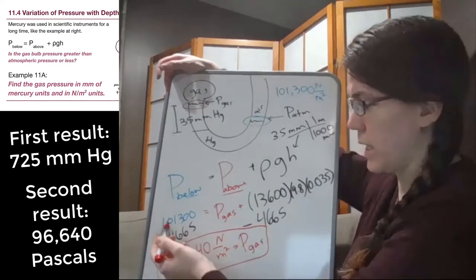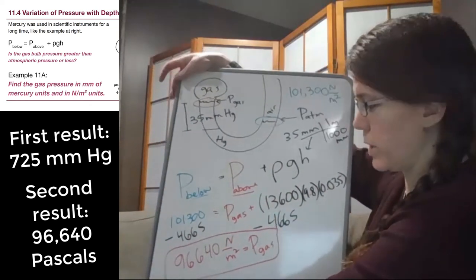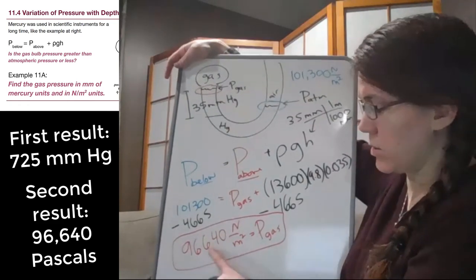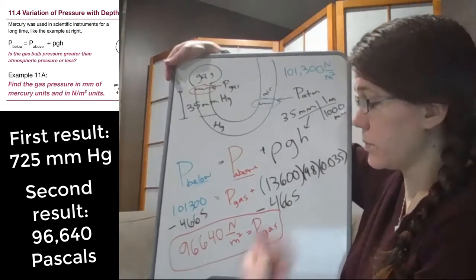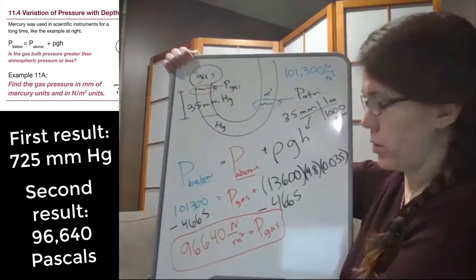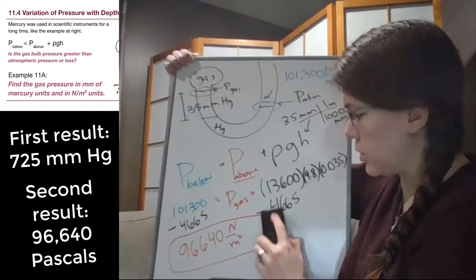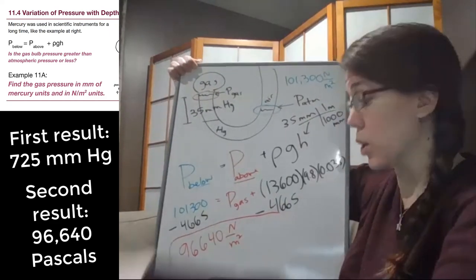So again, all we've done is we've taken the left side minus this term. It's color coded black so that we can follow it around. And we get 96,640 newtons per square meter. And that's our answer in standard units. Now it's worth noting something important here.